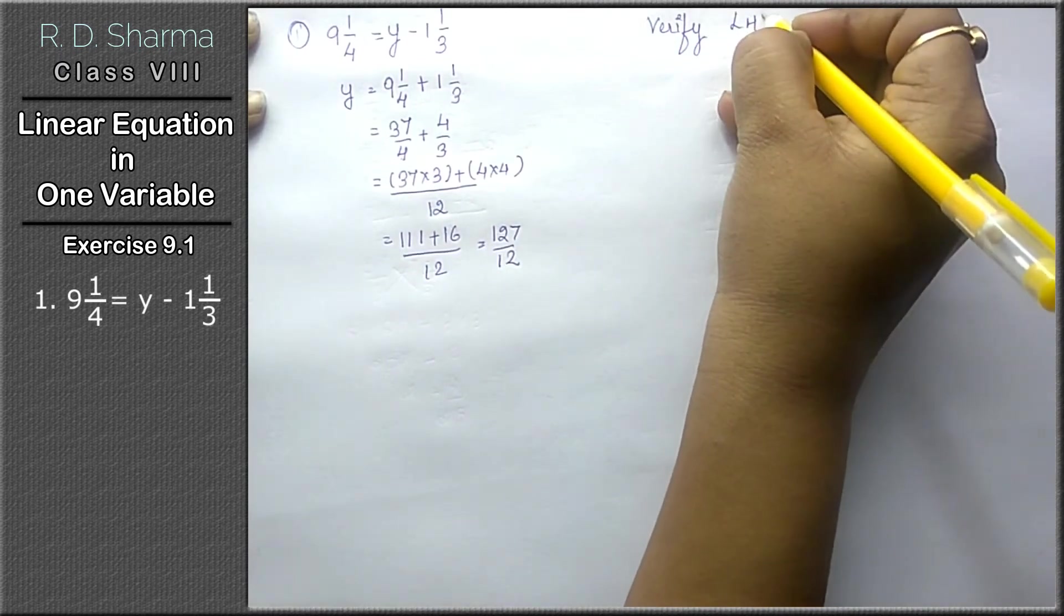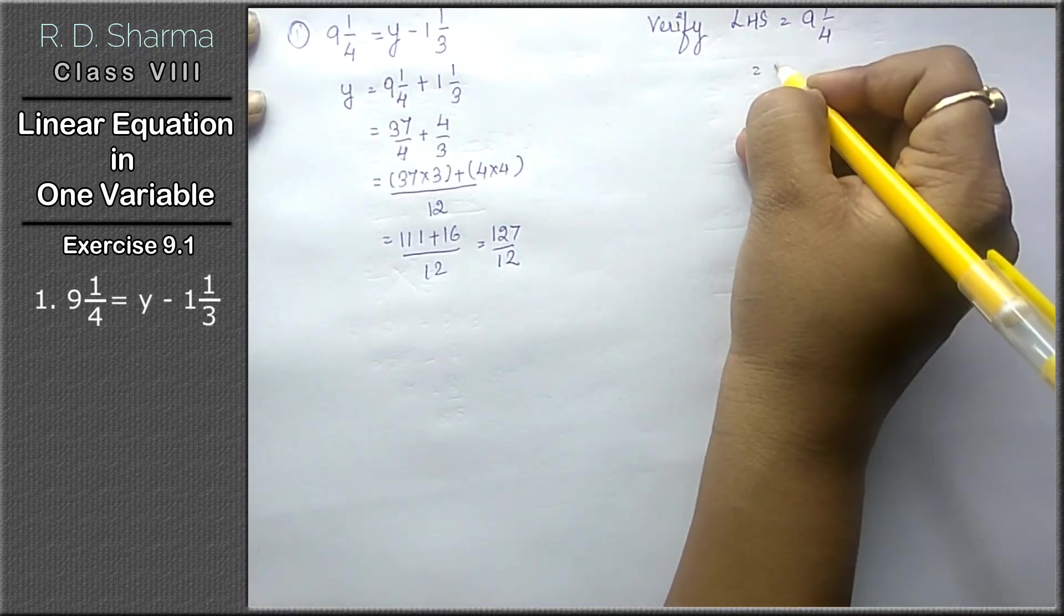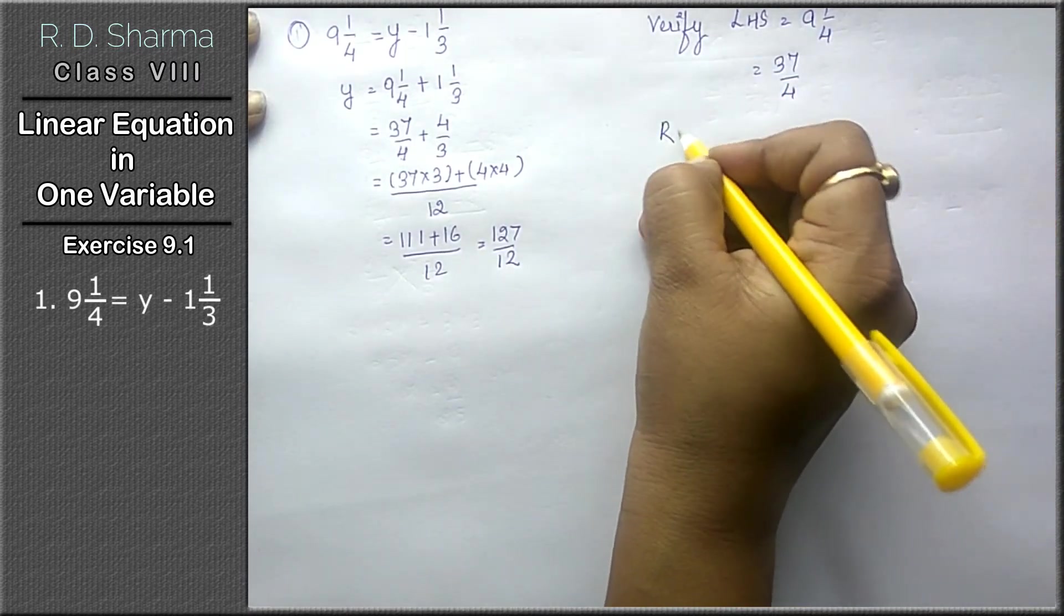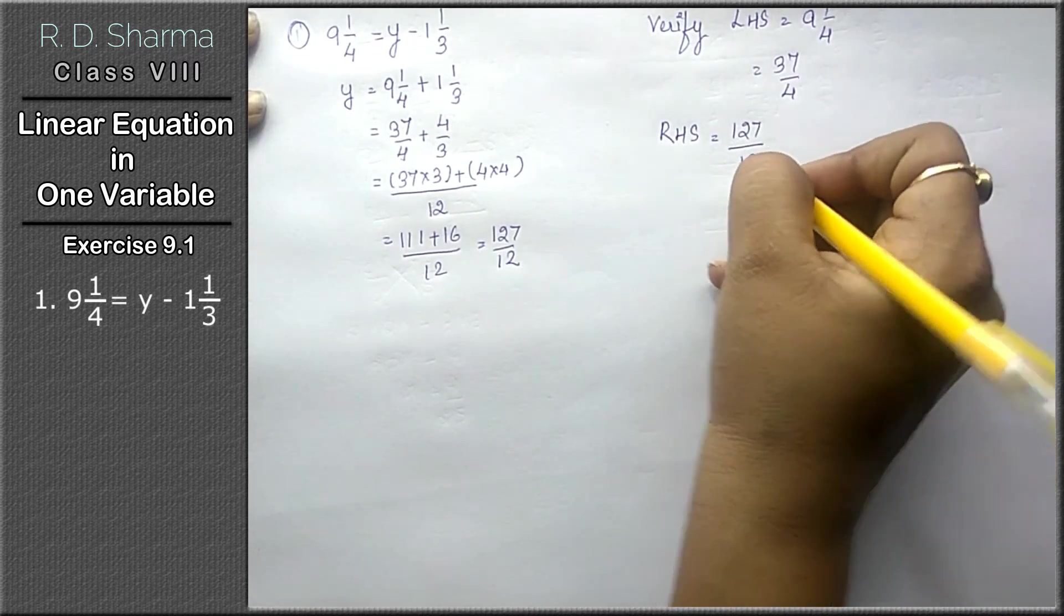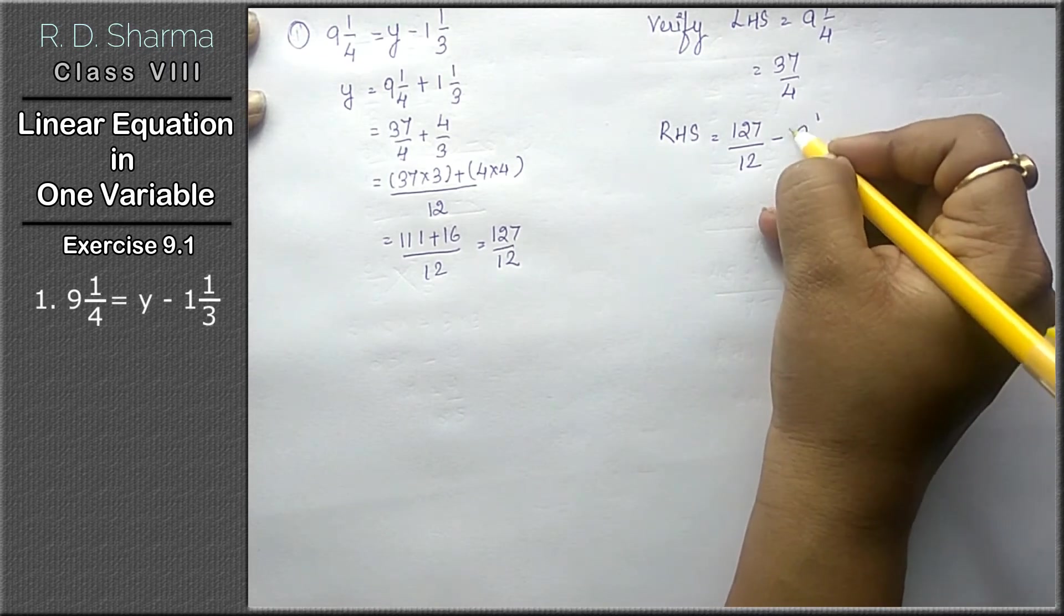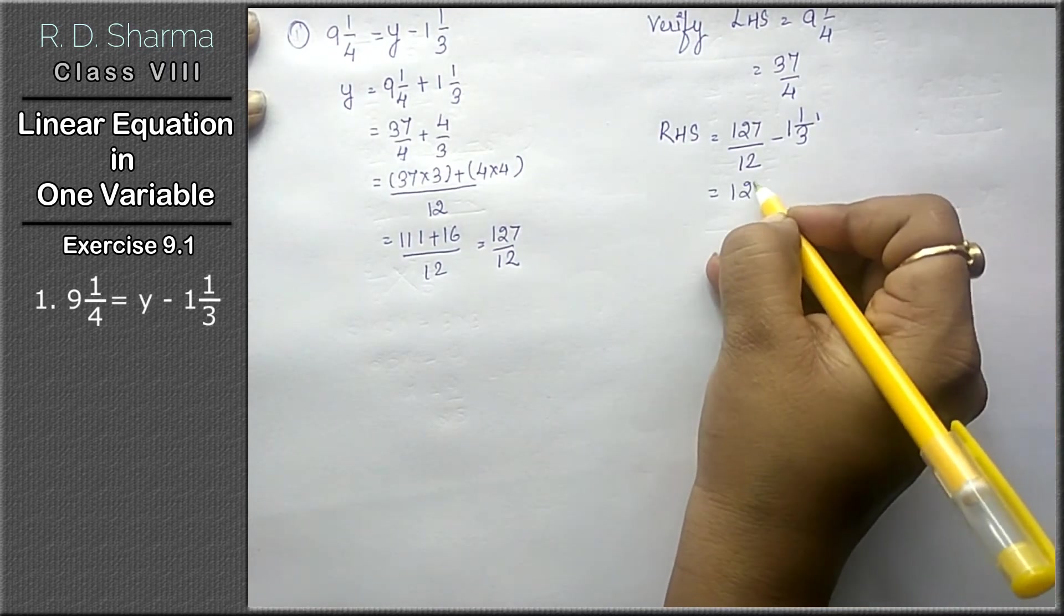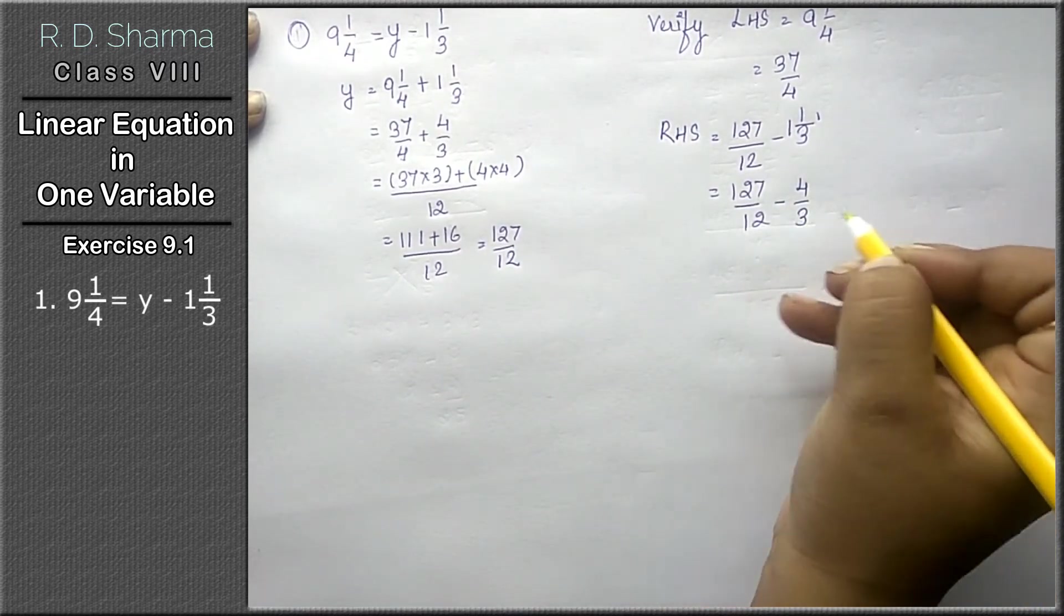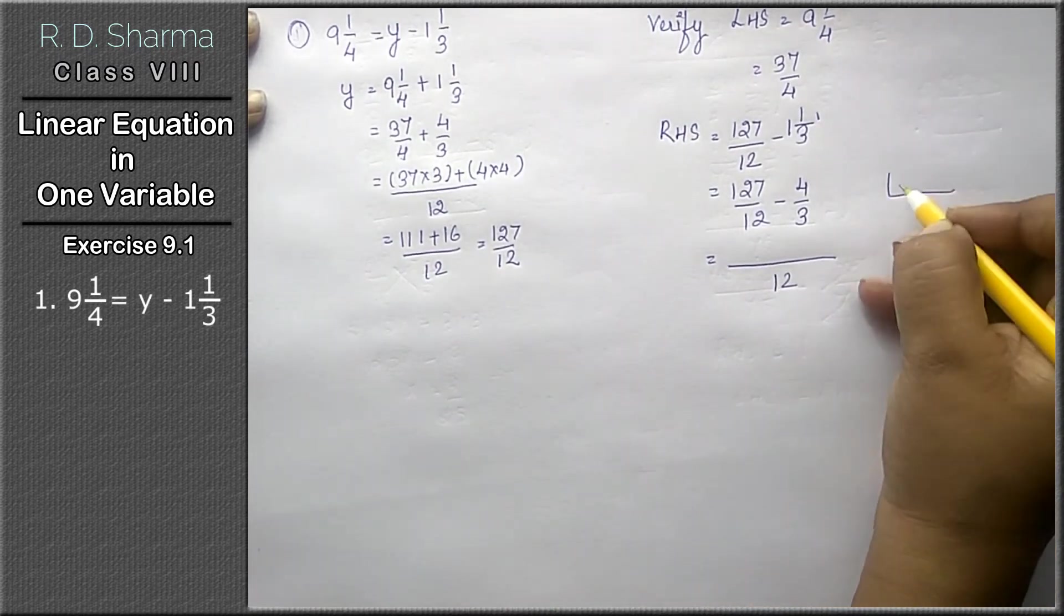Now we have to verify. On the left hand side, 9 whole 1 upon 4 is given, that means 37 upon 4 as we had already done. Right hand side, y's value is 127 upon 12 minus 1 whole 1 upon 3, so 127 upon 12 minus 3 times 1 is 3, plus 1 is 4 upon 3.